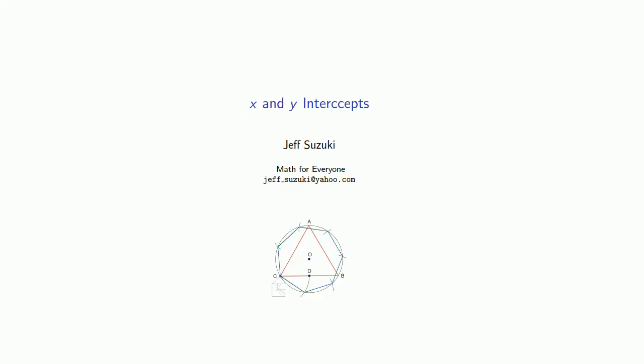Eventually we want to graph equations, but in order to do that we'll need to find points on the graph, and so a good place to start is with what are known as the x and y intercepts. These come about as follows.